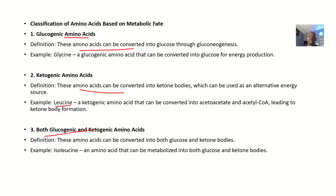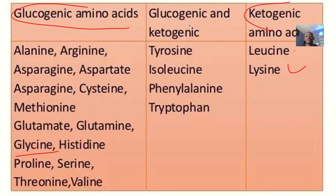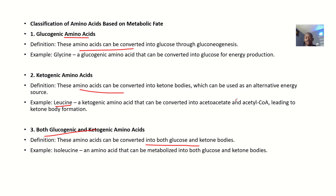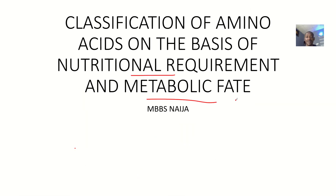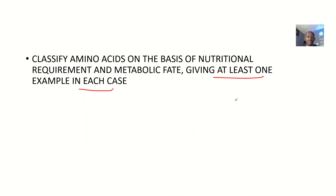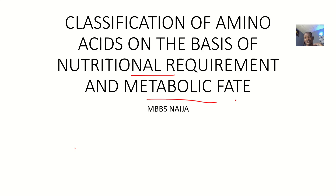Finally, some amino acids are both glucogenic and ketogenic — they can be converted to both glucose and ketone bodies. Examples include tyrosine, isoleucine, phenylalanine, and tryptophan. This topic is generally assumed to have been studied before, so that's the classification of amino acids.